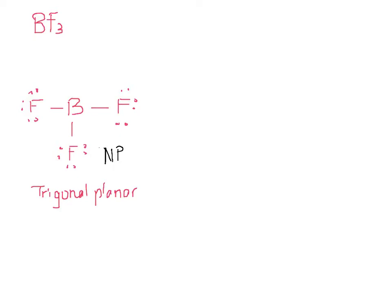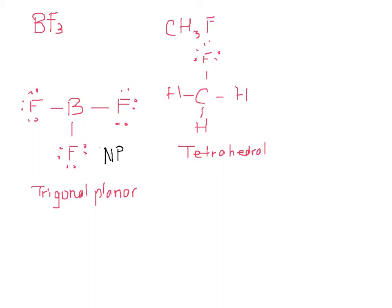Let's look at CH₃F. Carbon is in the middle, three hydrogens, one fluorine. Put in our lone pairs on fluorine. There are four bonded groups on the carbon, so that gives us tetrahedral electronic geometry and tetrahedral molecular geometry — no lone pairs. Since three of the bonded groups are the same and one is different, that's going to make it polar.